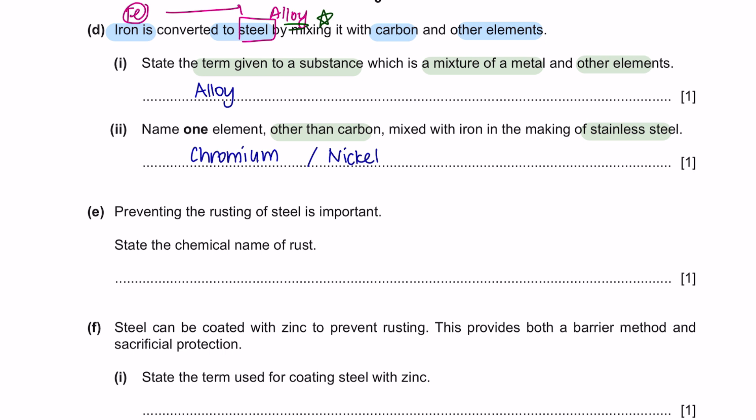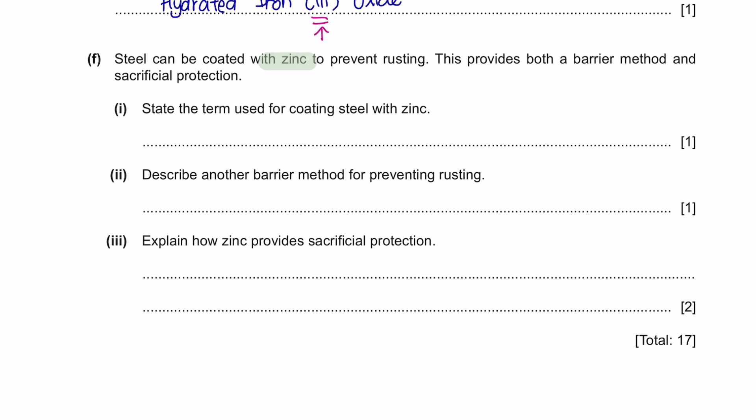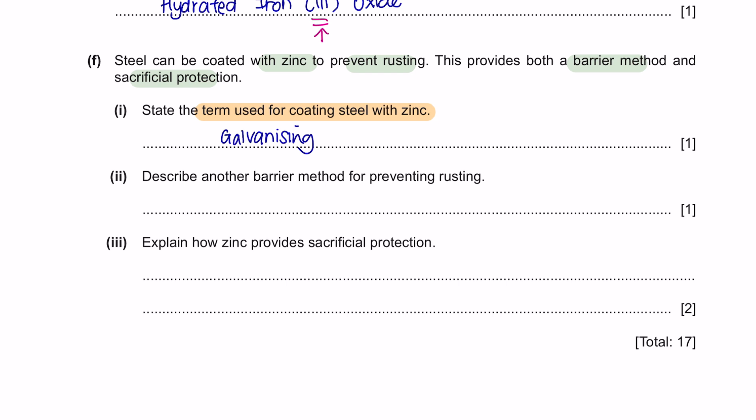Next, question E. Preventing the rusting of steel is important. State the chemical name of rust. The chemical name of rust is hydrated iron oxide. Do not forget to include your oxidation number. Next, steel can be coated with zinc to prevent rusting. This provides both a barrier method and sacrificial protection. Part 1: state the term used for coating steel with zinc. This is known as galvanizing. Next, describe another barrier method for preventing rusting. The simplest method to prevent rust is by painting or coating it with another layer which is plastic.